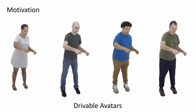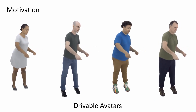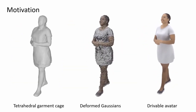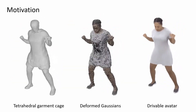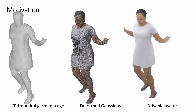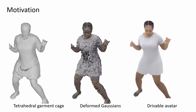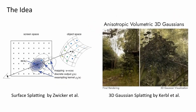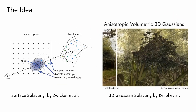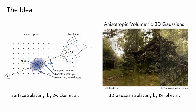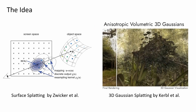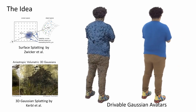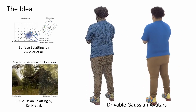Our method controls digital avatars using only sparse motion vectors while keeping high-quality details. Based on tetrahedral cages, which transform 3D Gaussians and differentiable rasterizing, our method is promising to handle challenging cases like sliding garments. DEGA is based on 3D Gaussian splatting, a recent approach that extends surface splatting by Zilker et al. to a 3D radiance field. 3D Gaussian splatting offers the speed and high-quality differentiable rendering necessary for photorealistic avatars.